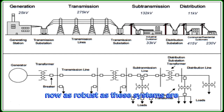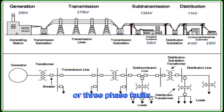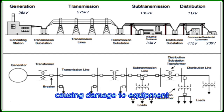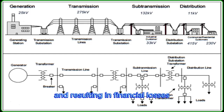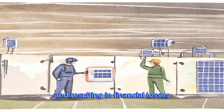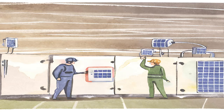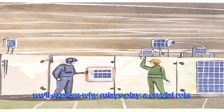As robust as these systems are, they are not immune to faults — be it single phase faults, ground faults, or three phase faults. These faults can unleash high currents causing damage to equipment, disrupting the power system, and resulting in financial losses. Enter the protection relays: the unsung heroes of our power systems.